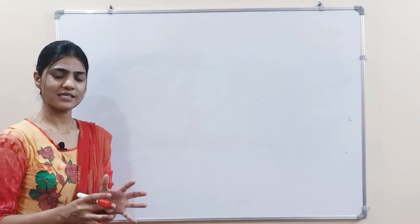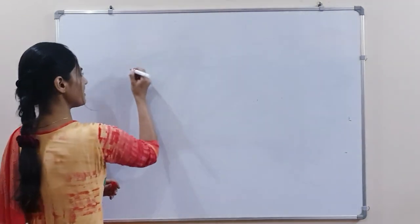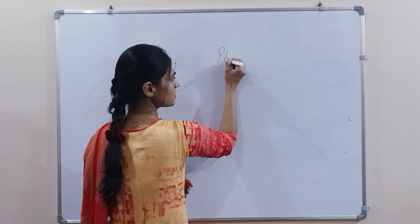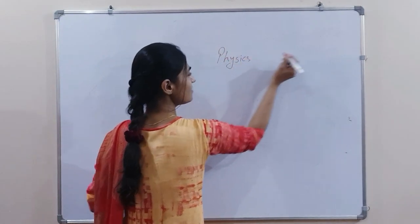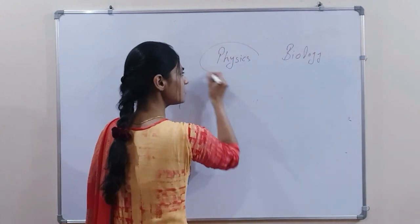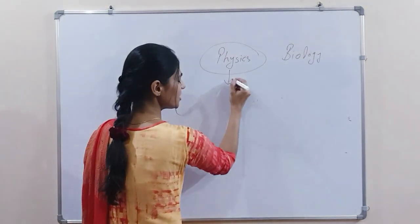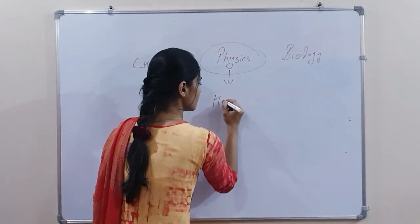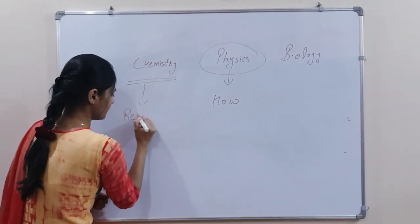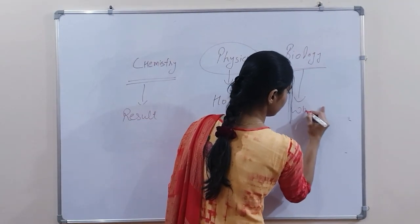Science hume authority data hai kisi bhi chiz ko jahnne ka. Science ke anndar hi humare paas chemistry, physics and biology. Physics mayre hisaab se itna cool kiyo hai ki physics joh hai wu authority data hai question poochne ki how. Chemistry se hume pata lagta hai joh result and biology haa ji haamay batata hai.